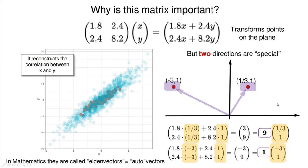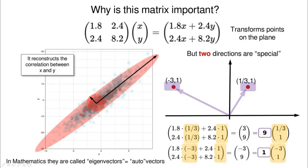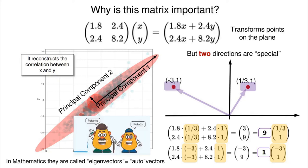Basically, applying the covariance matrix is taking something symmetric, like a sphere, and transforming it into something asymmetric — enlarging one direction by 9 times and leaving the other direction unchanged. This first vector is called principal component one, and the second is called principal component two, or equivalently the first eigenvector and the second eigenvector. It's a potato-potato situation, but we are talking about the same thing.